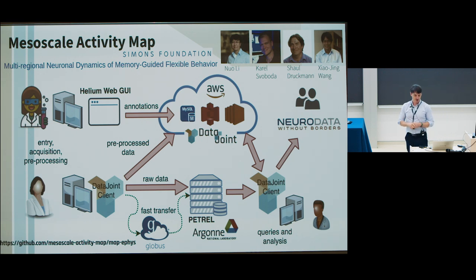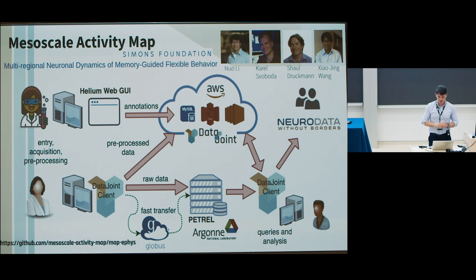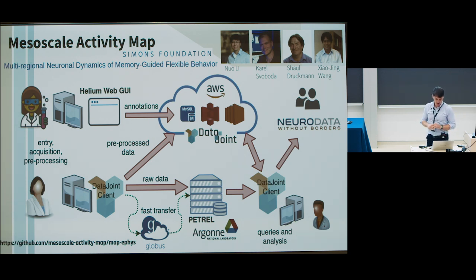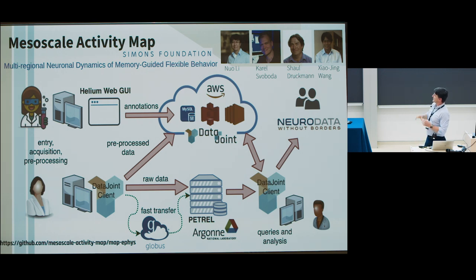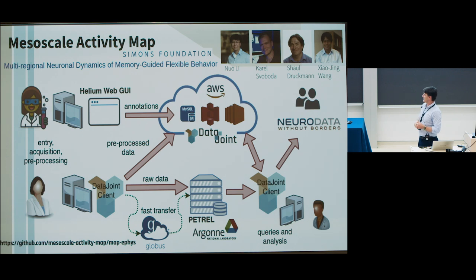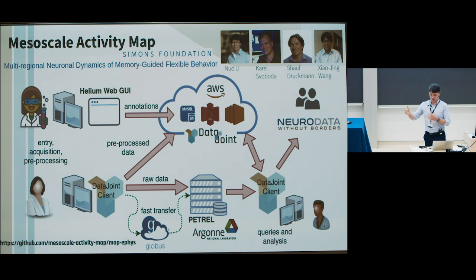One example of a similar project is called the Mesoscale Activity Map, funded by the Simons Foundation, between four labs — BCM, Janelia Farm, Stanford, and NYU. The data scientists defined the data pipeline and we set up an Amazon Cloud pipeline for them; they defined the logic and ran the computations. The Argonne National Laboratory provided massive storage to store shared data accessible to everybody.